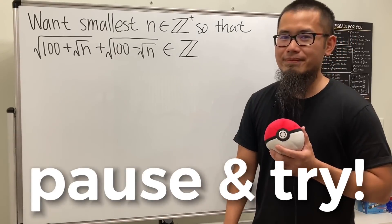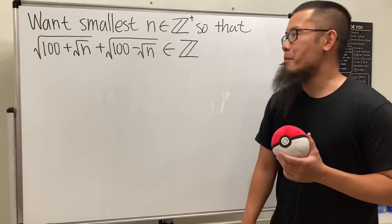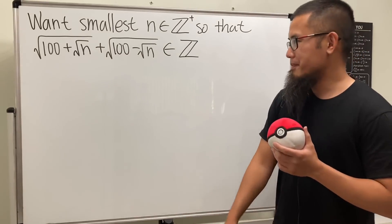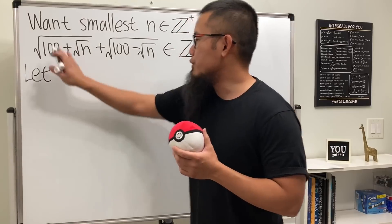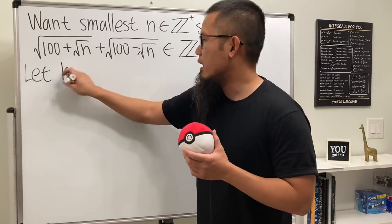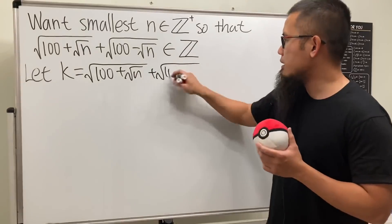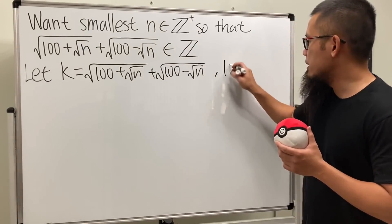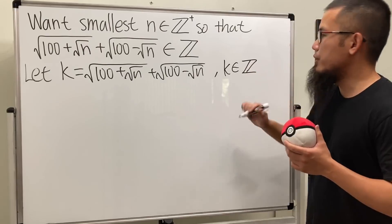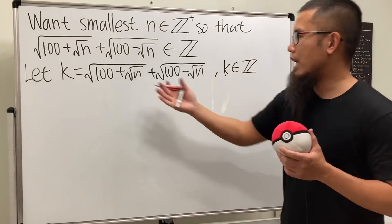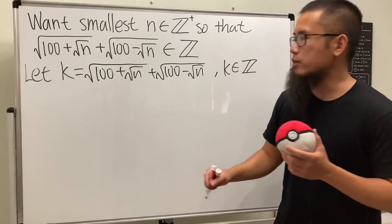As always, please pause the video and try this first. Okay, let's see how we can do it. Perhaps we can just call this expression k, and let's indicate that k is an integer. Because we have square roots, it's a good idea to square both sides.